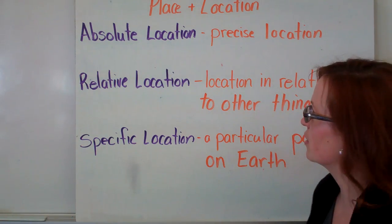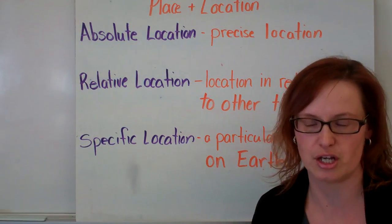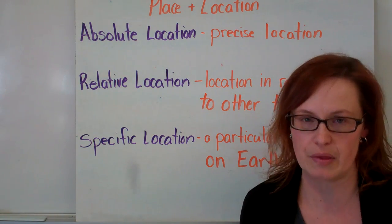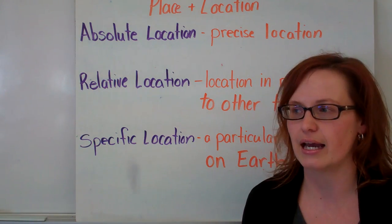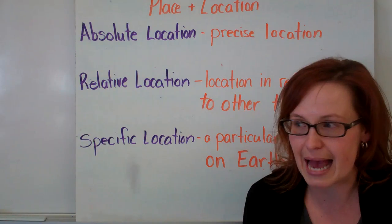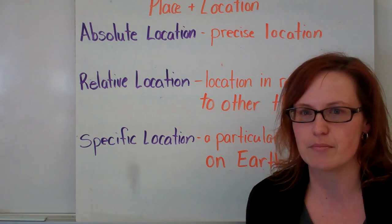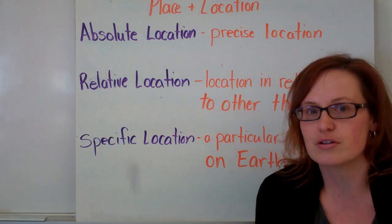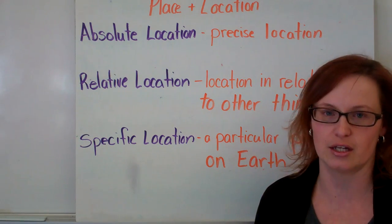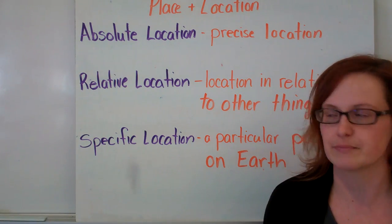Absolute location. Absolute location is your precise location — it is the exact spot where you are on the earth. It involves longitude and latitude, and it's down to the most finite degree. So if I move a few centimeters to the left, I'm in a different absolute location. If I move forward or back, my absolute location changes.